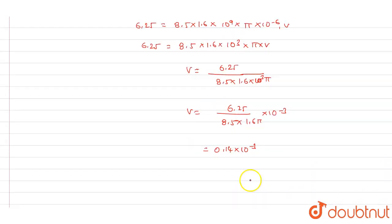We get the value of v as 0.14 × 10^-3 meters per second. This is the value of drift velocity that we have got. This is the correct answer for this question.